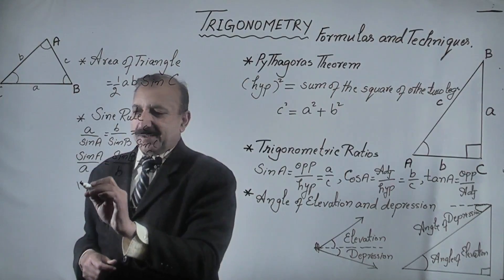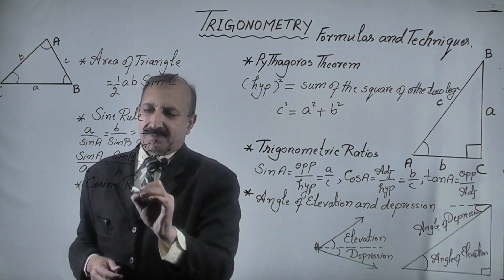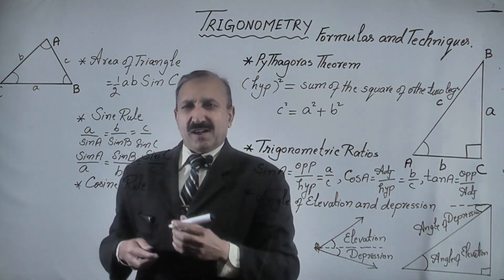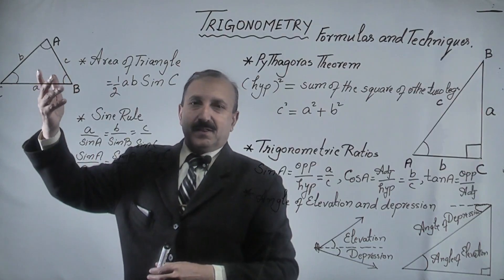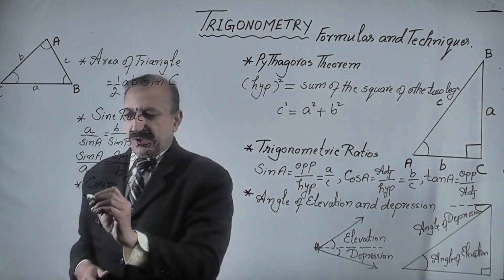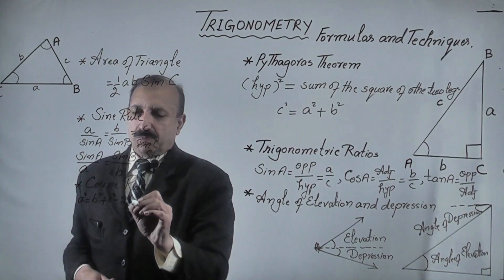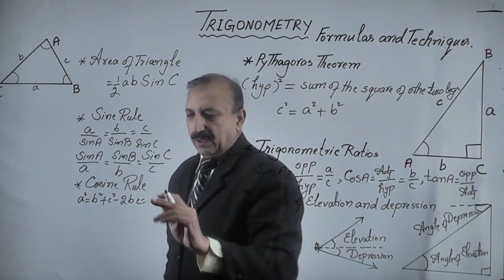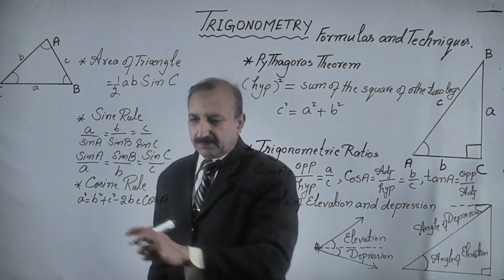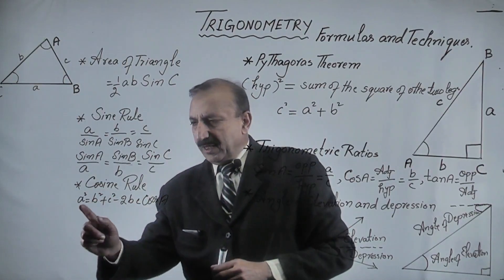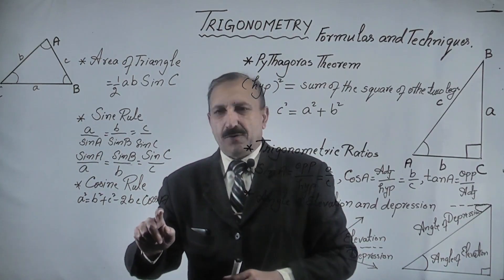The next one is the cosine rule. When there are cases where sine will not support us to find some angles and sides, we will use the cosine rule. This relation is: a squared equals b squared plus c squared minus 2bc into cosine of angle A — the angle which is related to side a. So the cosine rule is: a squared equals b squared plus c squared minus 2bc cosine A.